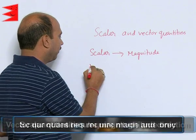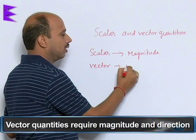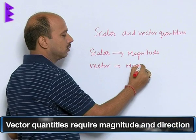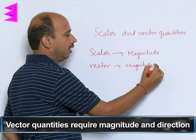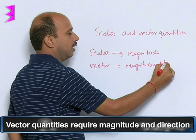Whereas, vector quantity required magnitude and direction.